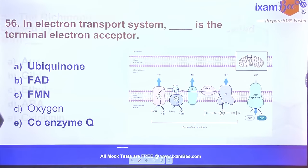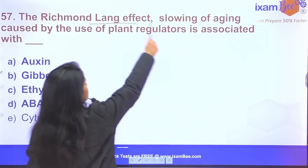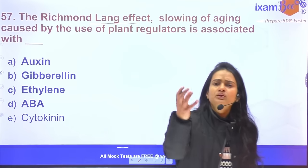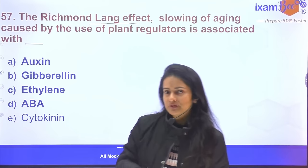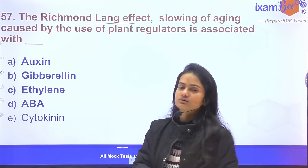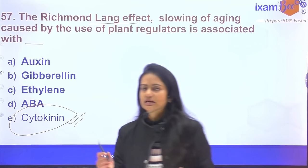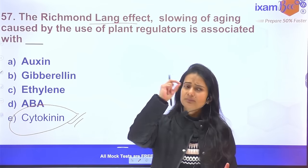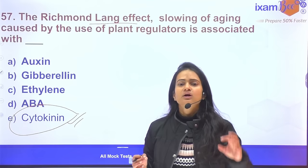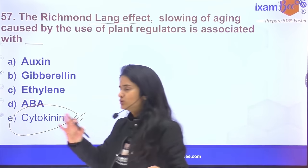Question 57: The Richmond-Lang effect refers to the slowing down of chlorophyll degradation. This effect is due to cytokinin. When cytokinin solution is applied to a leaf — even after it is detached from the plant — the degradation of chlorophyll slows down compared to untreated leaves.